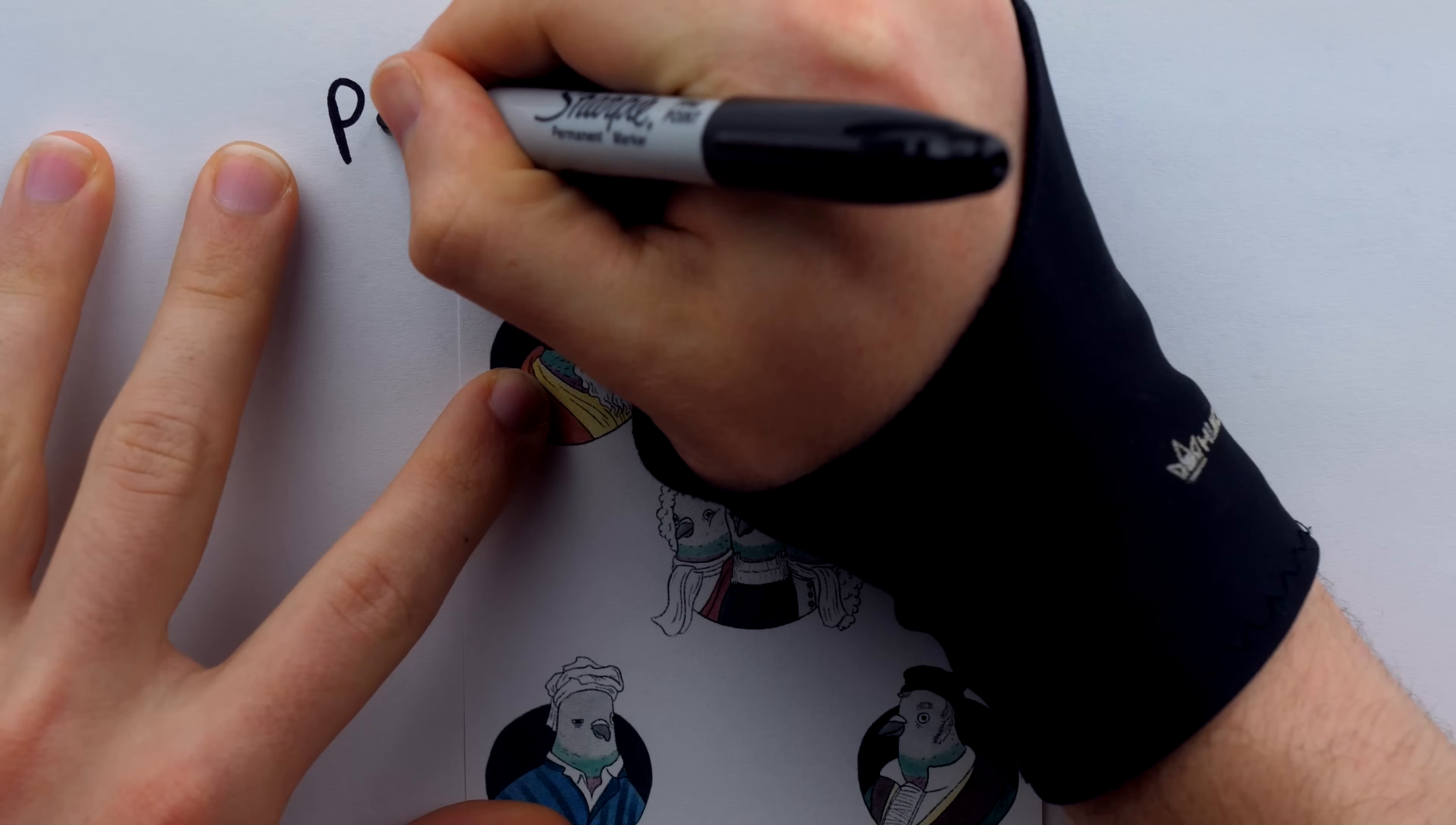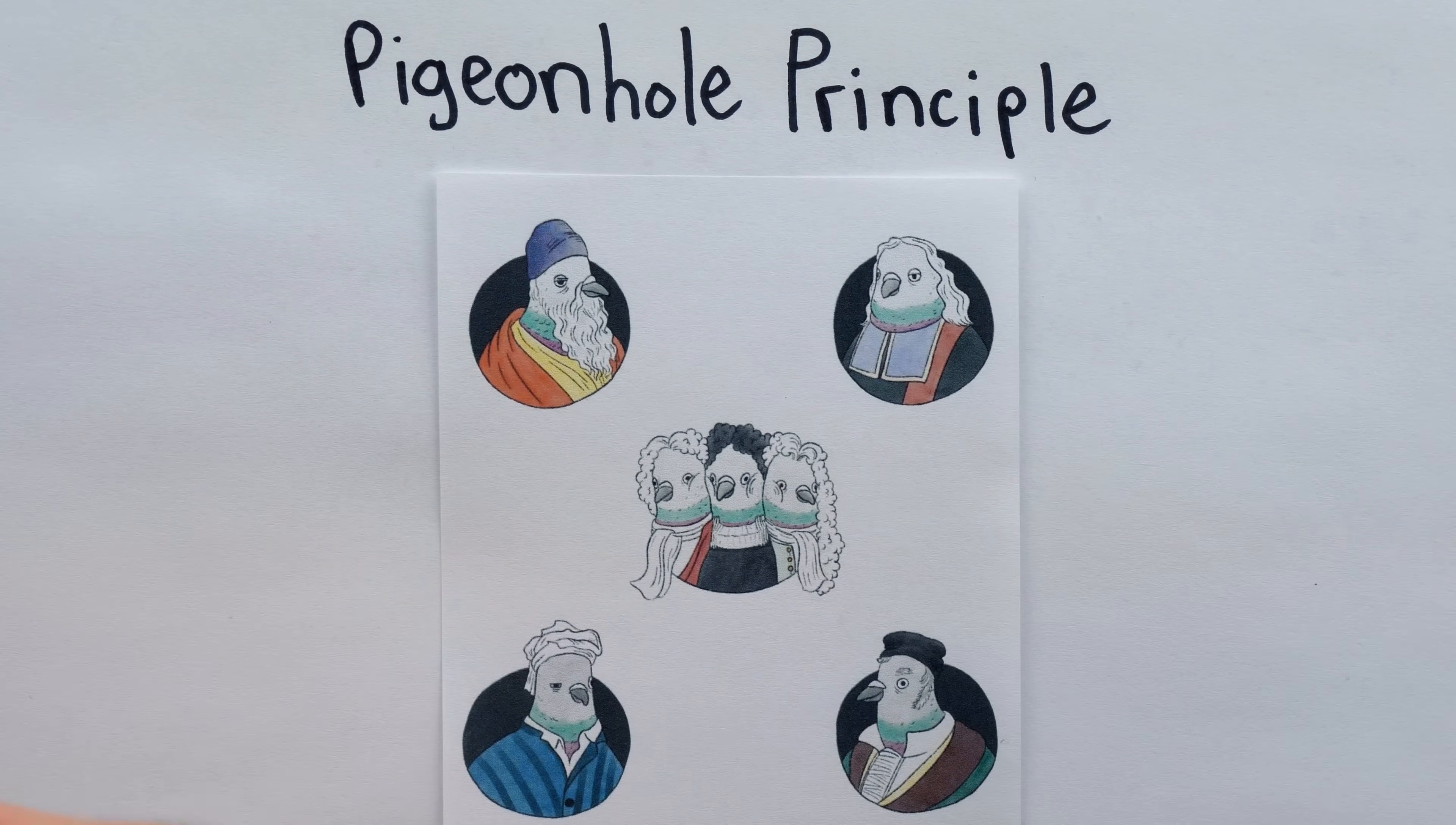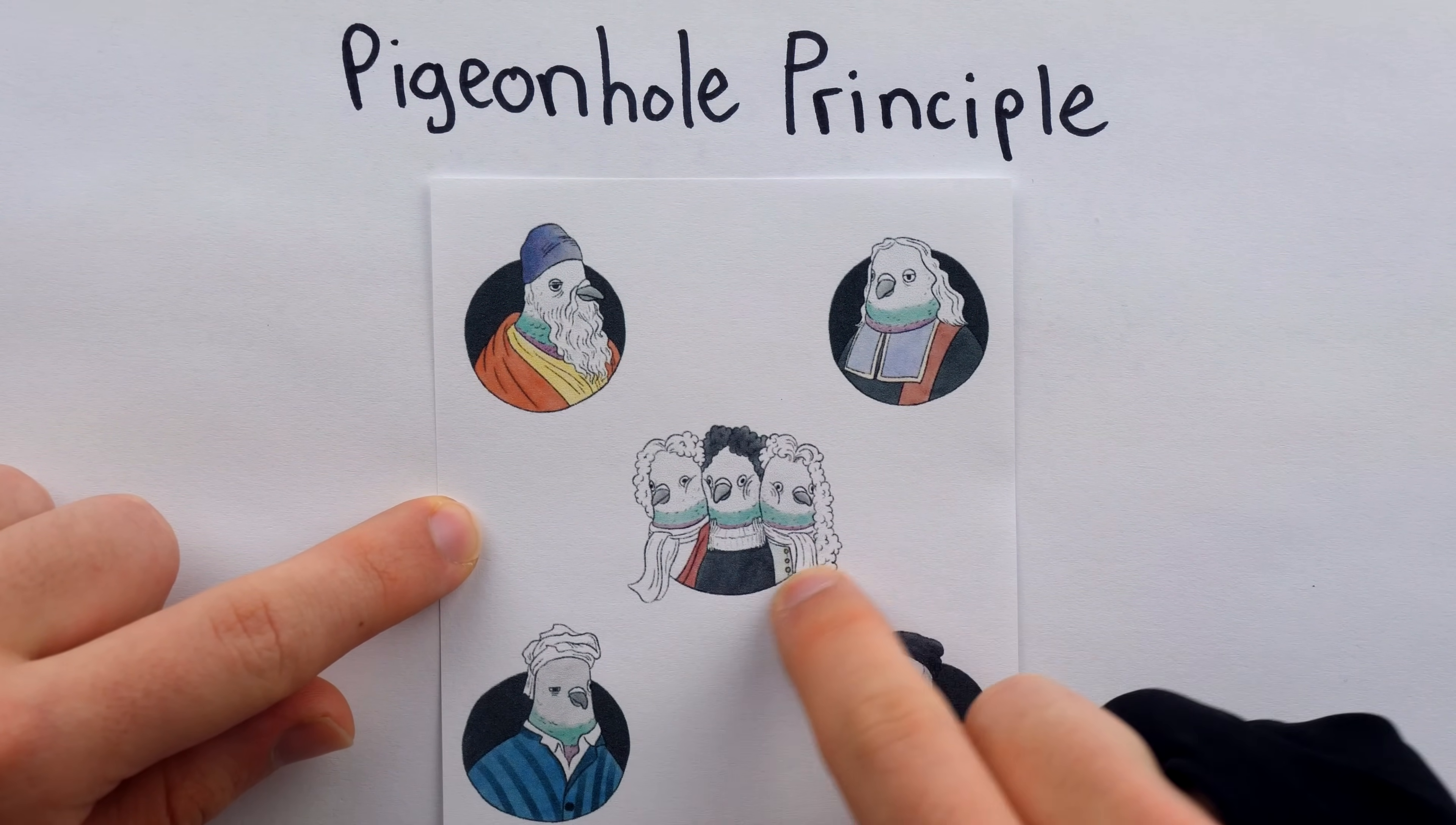You can see there are 1, 2, 3, 4, 5, 6, 7 pigeons, but only 5 holes. The Pigeonhole Principle says if there's more pigeons than there are holes, then at least one hole has to have at least two pigeons. So it's no surprise here that we see a few pigeons all cozied up together in a single hole.